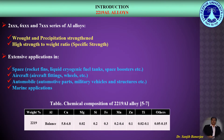2219 aluminum alloy is one of the 2000 series aluminum alloys which have extensive applications in space, aircraft, automobile, and marine industries. Here we can see the standard chemical composition of 2219 aluminum alloy.